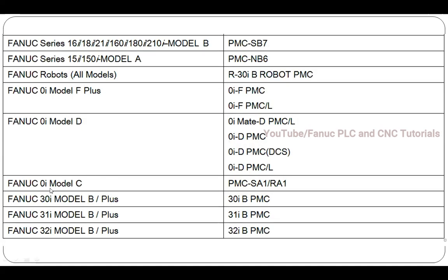For the latest systems — the 30i series Model Plus, TF, TD — you have to select accordingly. For the latest 0i TF and MF series used in CNC turning and VMC, you select 0iF PMC or 0iF PMC DC. For TD systems select those corresponding models. For 0i-TC and 0i-MC series, select PMC SA1 or RA1. For multi-axis models like 30i, 31i, 32i Model B series, select the models according to the chart. This is a very important point.